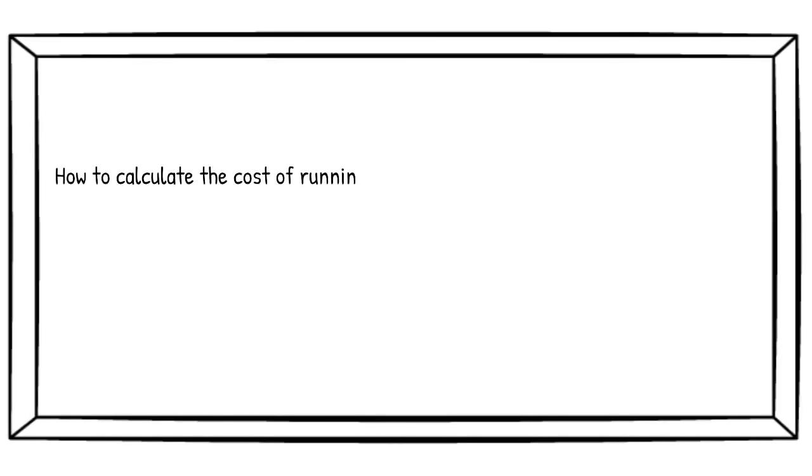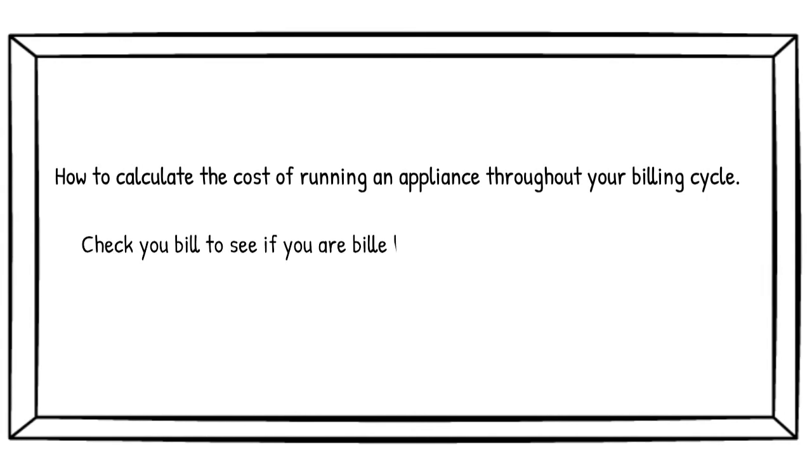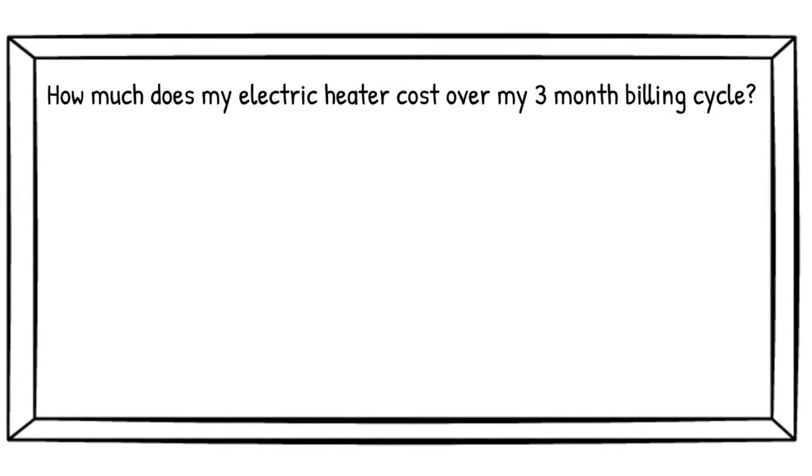Let's now figure out the cost of our appliance per billing cycle. I receive my bill every three months, so that's an average of 12 weeks per billing cycle. To calculate the cost of an appliance over a three-month billing cycle, we use the following equation.